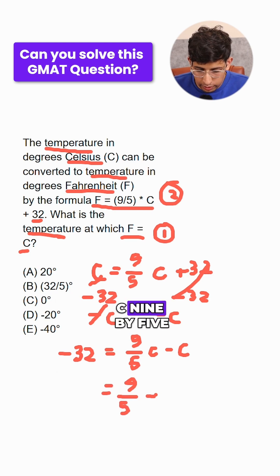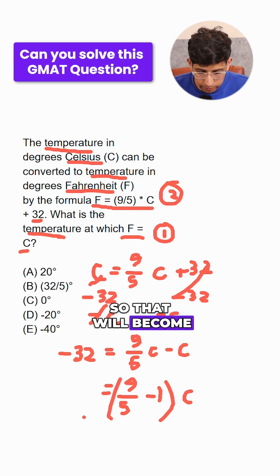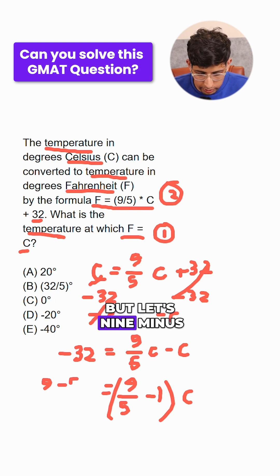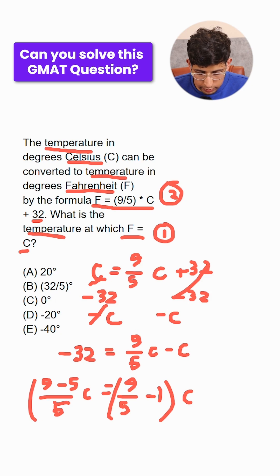9 by 5 C, 9 by 5 minus 1 times C, right. So that will become 9 minus 5 by 5 C, which is 4 by 5 C.